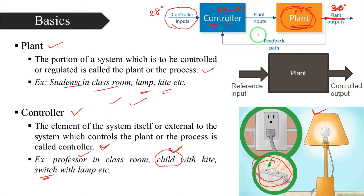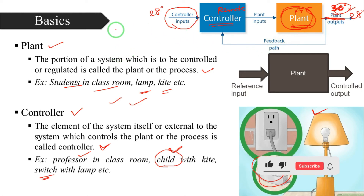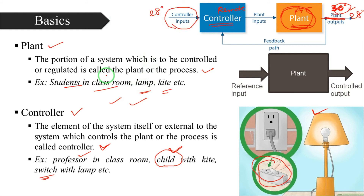When we check the temperature sensor in the room, we check the control range and check the plant. When the output reaches 28 degrees, the plant will automatically shut down, achieving the required output. Like that, the professor delivers the lecture in the classroom, the students provide feedback, and we can deliver a 100% successful lecture — making it a complete closed loop control system.